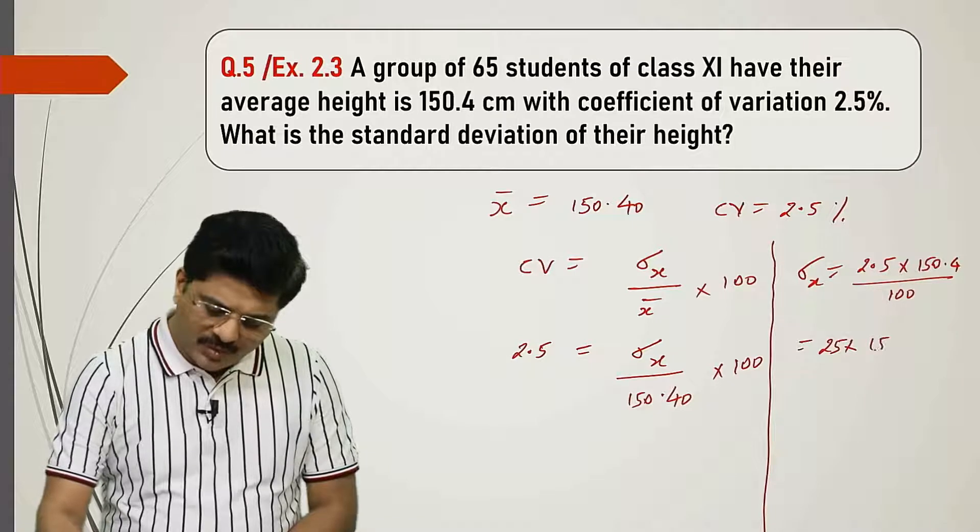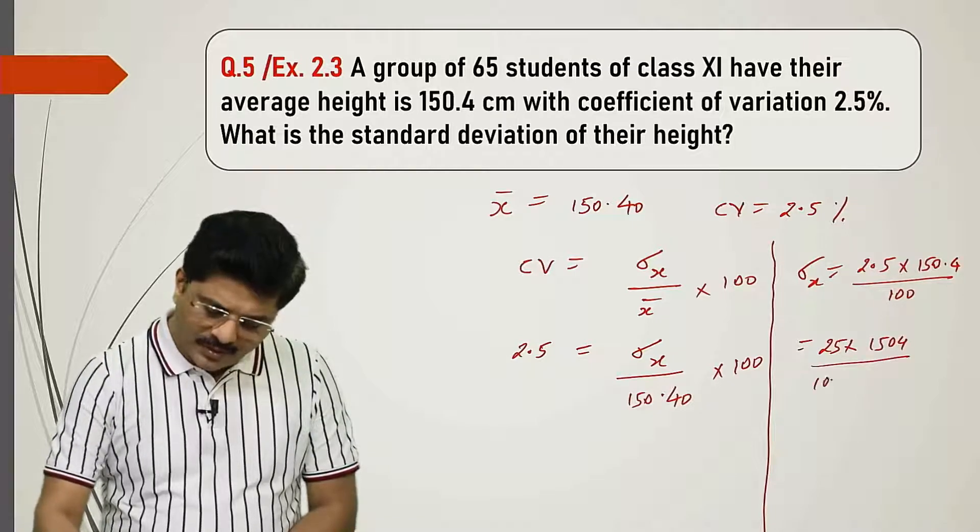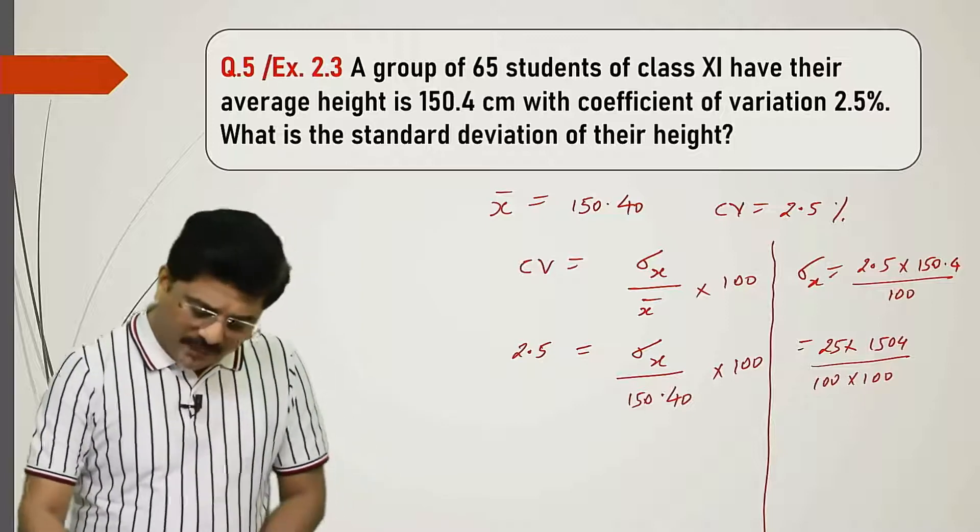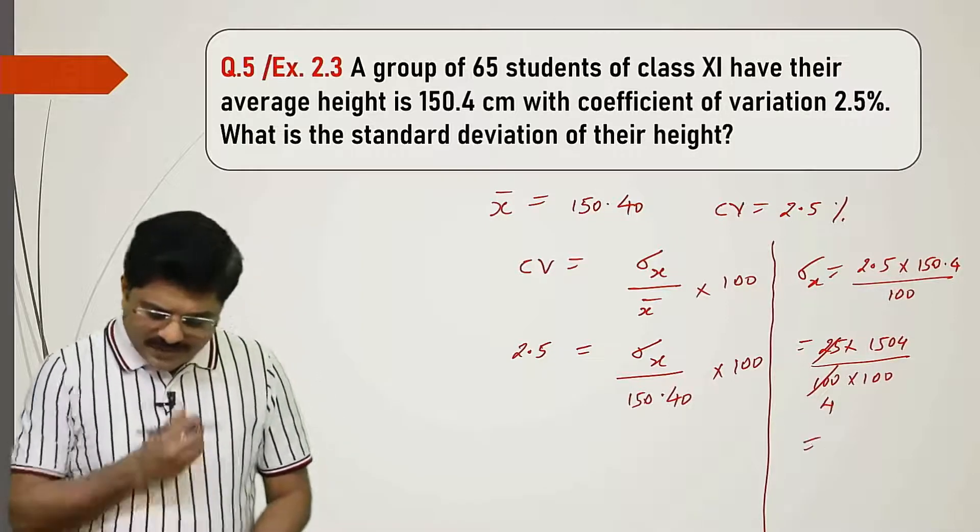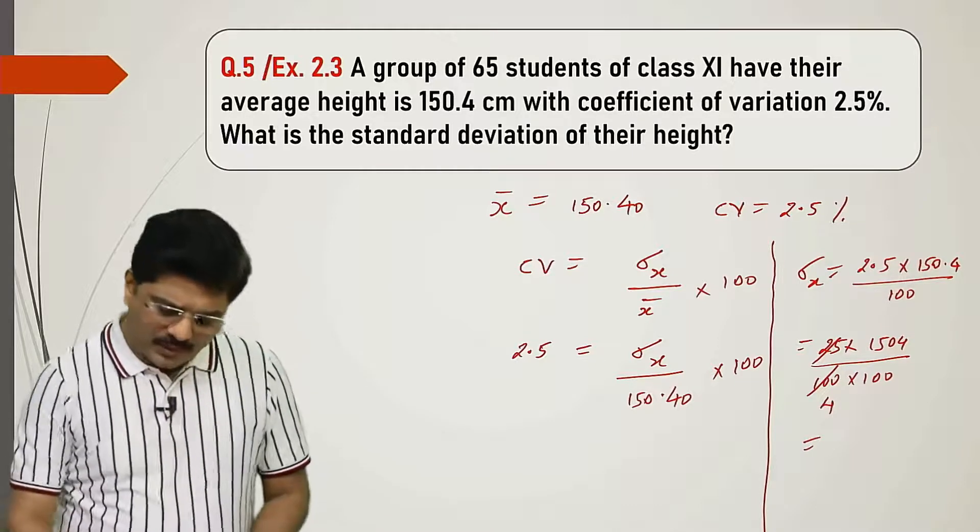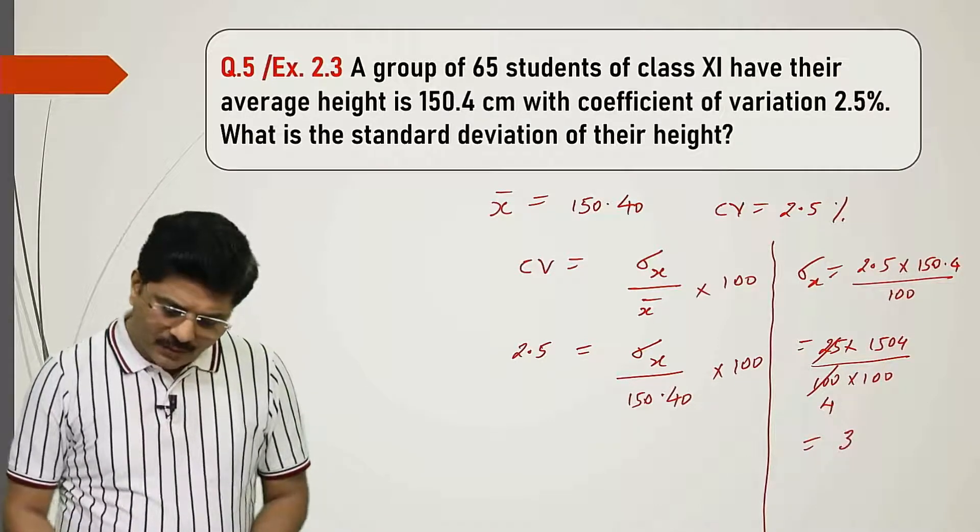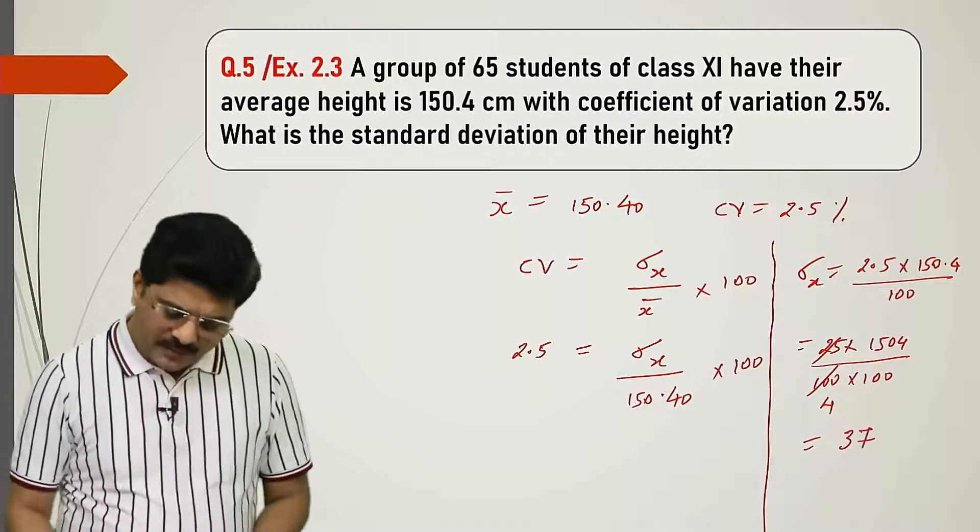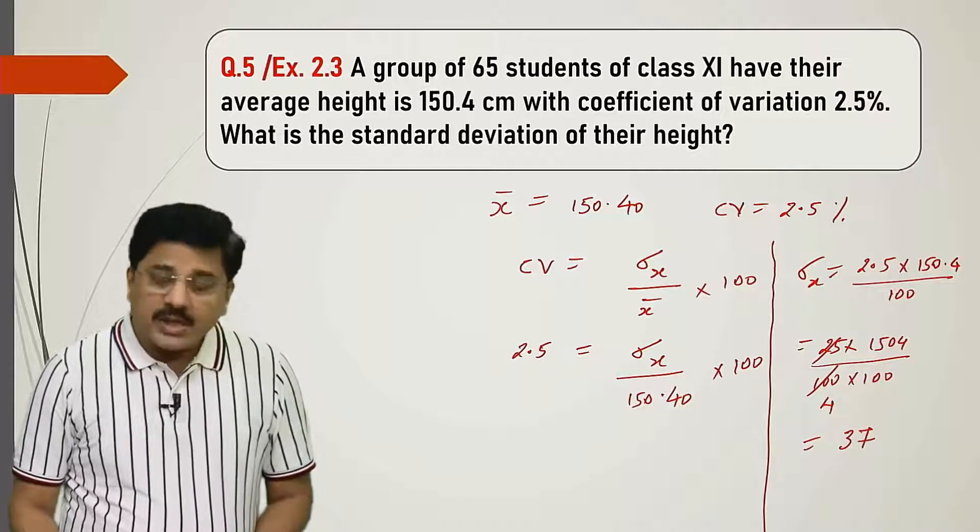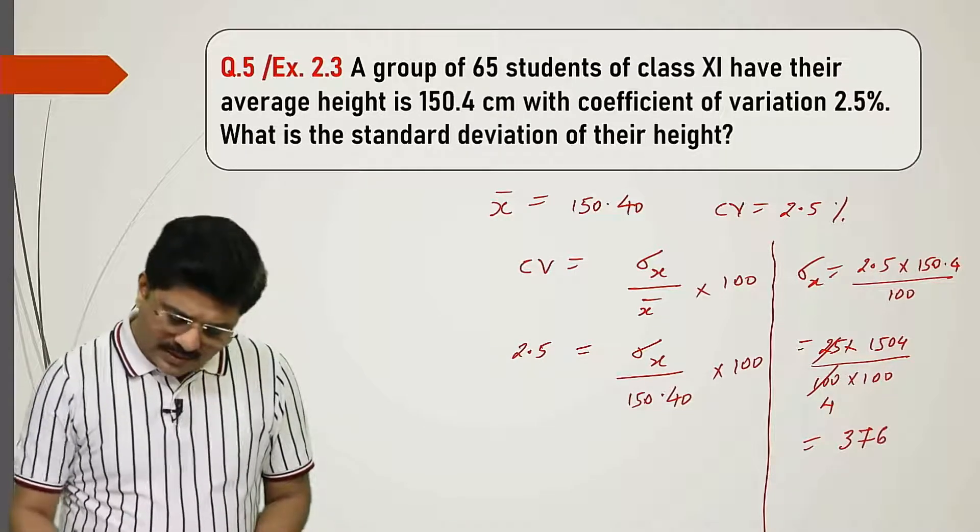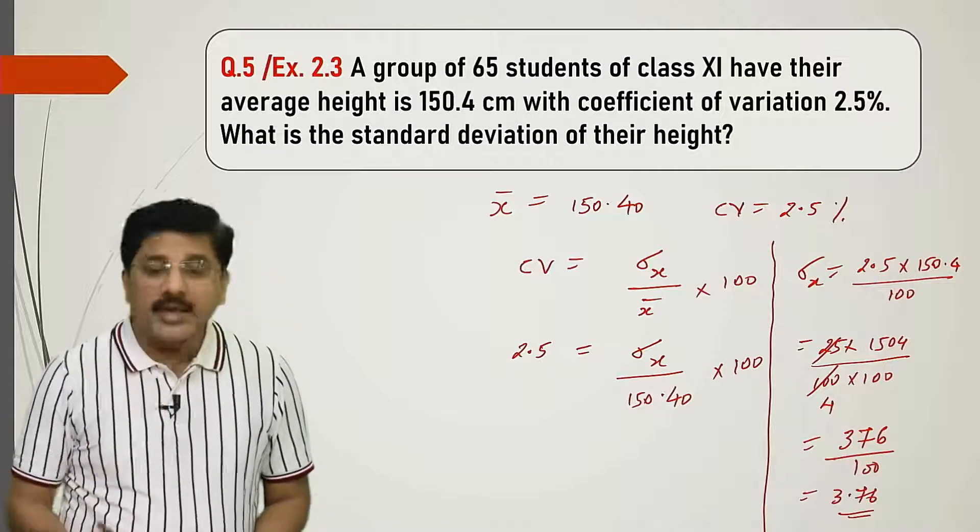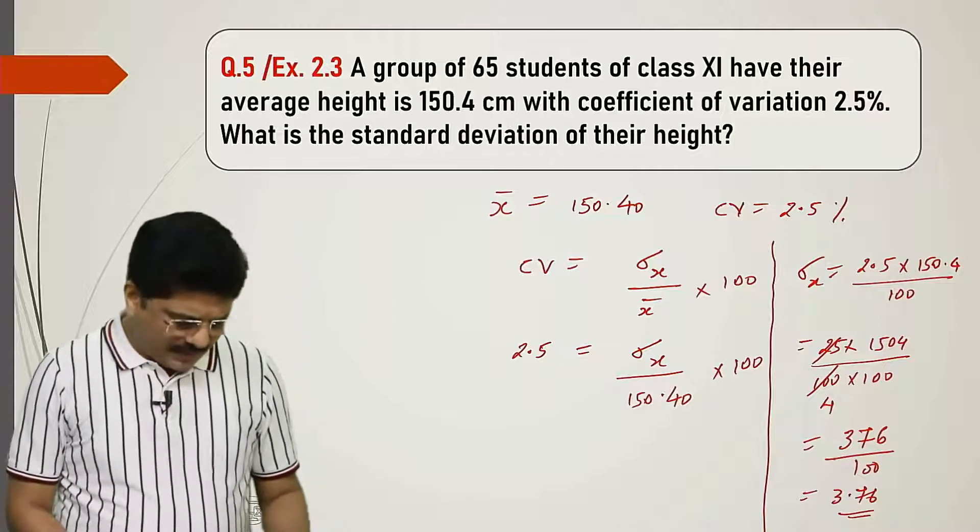If we solve this: 25 into 1504 upon 100 into 100. 25 fours are 100. Now 1504 upon 4: 4 threes are 12, 4 sevens are 28, 4 sixes are 24 upon 100. So this gives 3.76. This is our standard deviation of X.